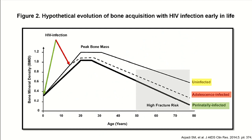This figure shows the hypothetical evolution of bone acquisition with HIV infection early in life. For HIV-uninfected individuals, bone mineral accrual occurs during the first two decades of life, reaching adult peak bone mass during the third decade and then gradually declining. For those with perinatally acquired HIV infection, bone mineral accrual seems compromised from birth, resulting in lower adult peak bone mass that then rapidly declines over time.